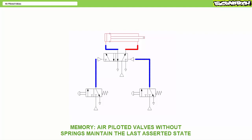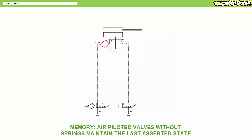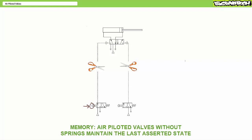Memory is a desirable feature for several reasons, the principle one being safety. For example, if an operator pressed and released push button one to extend the cylinder to lift some heavy load, and then cut both pilot lines and tossed them on the floor, the cylinder would remain extended and the load would remain lifted because the double air piloted valve remembers the last asserted state.